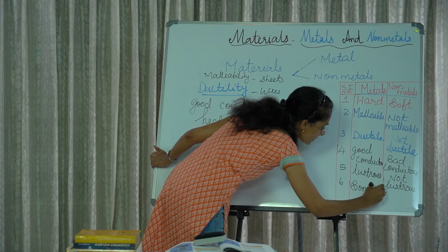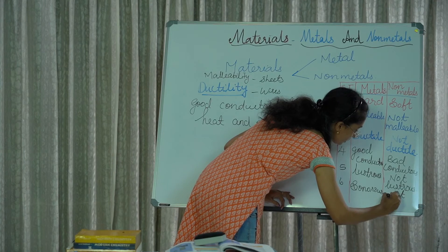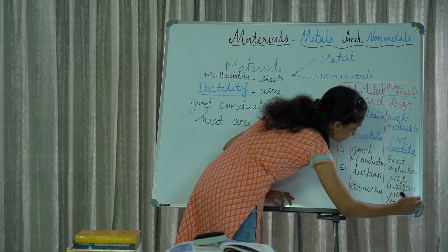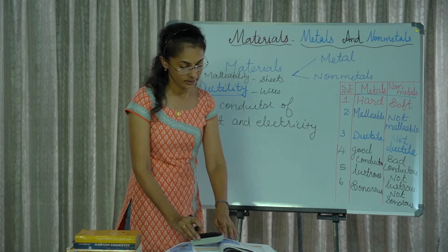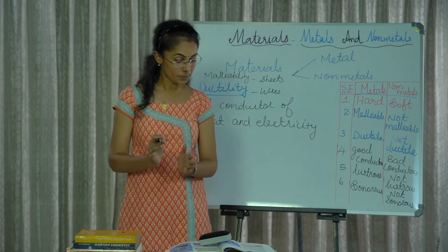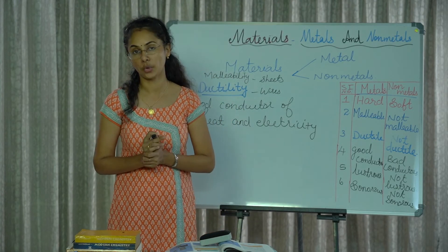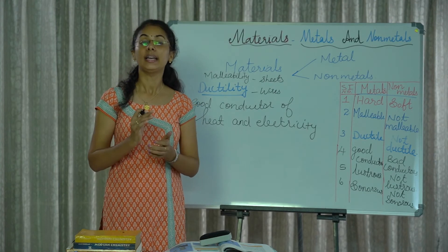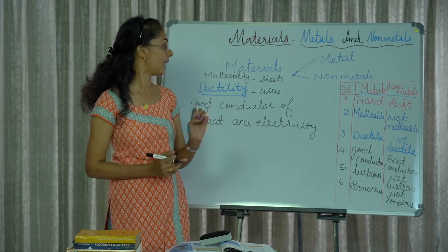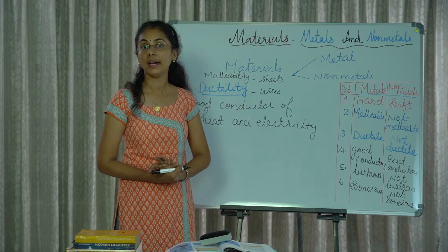The sixth property of metals is sonority. Metals are sonorous and non-metals are not sonorous. Sonorous means that the metals produce a ringing sound when struck; they are said to be sonorous.